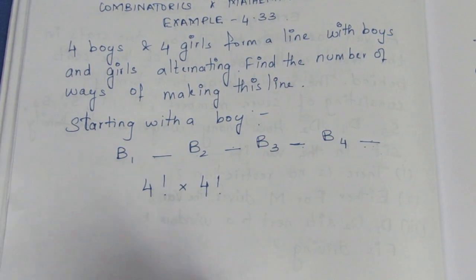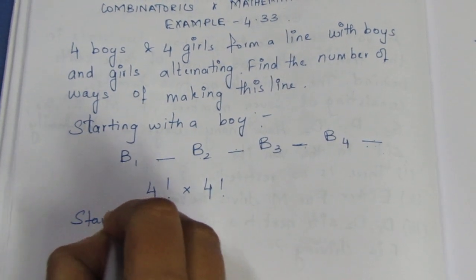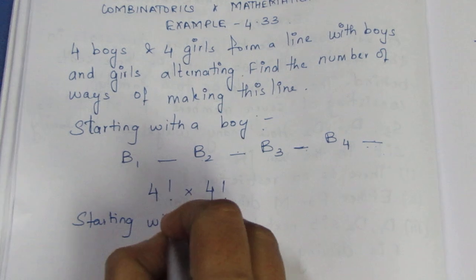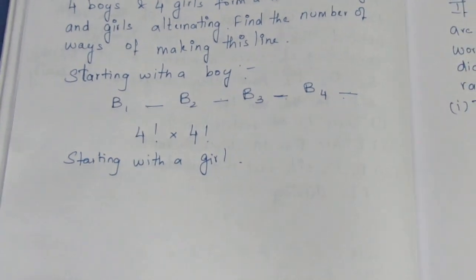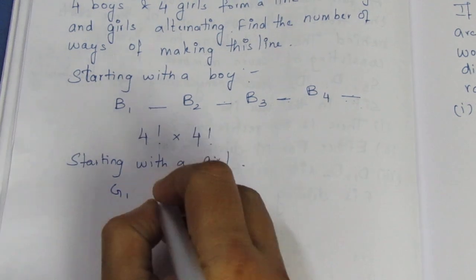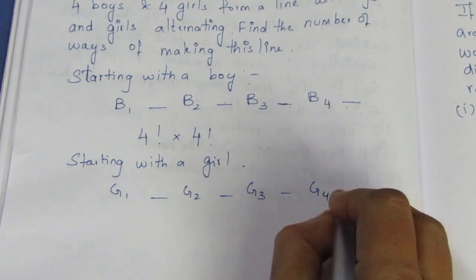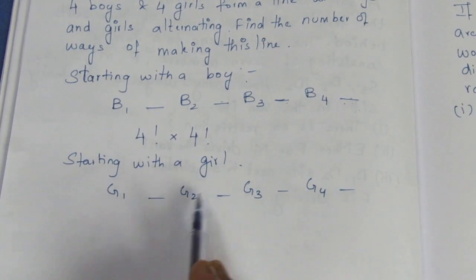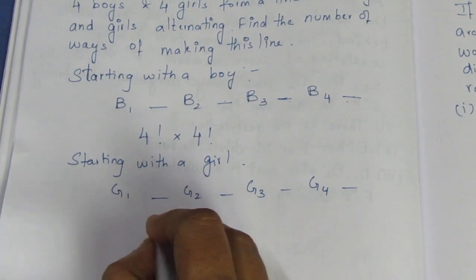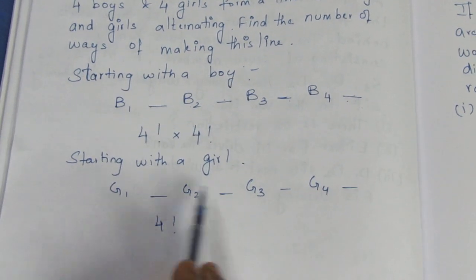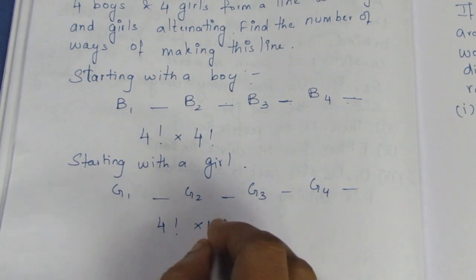Now, starting with a girl: G1, G2, G3, G4 are placed in the girl positions. Then there is a space. If you look at girls, you can arrange them — that is also 4 factorial. If you look at boys, you can use 4 factorial. So starting with girls also gives 4 factorial into 4 factorial.